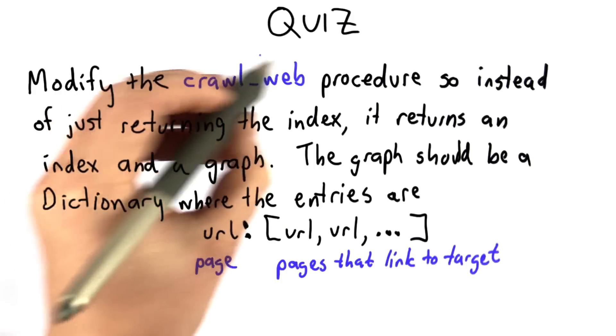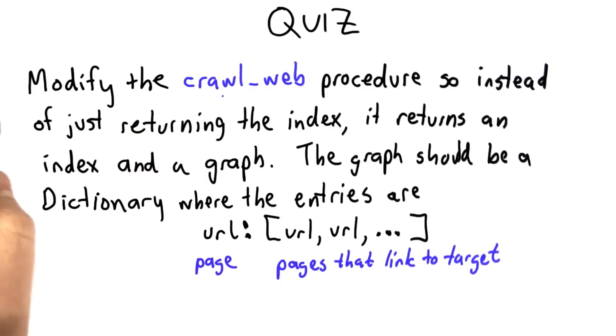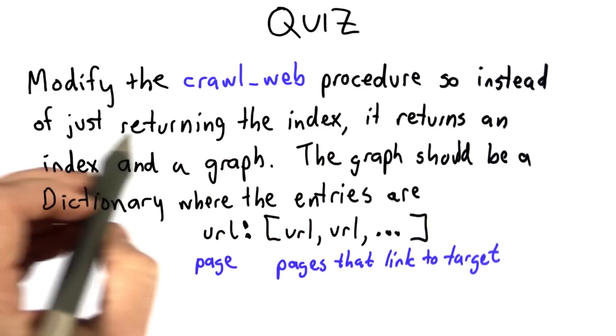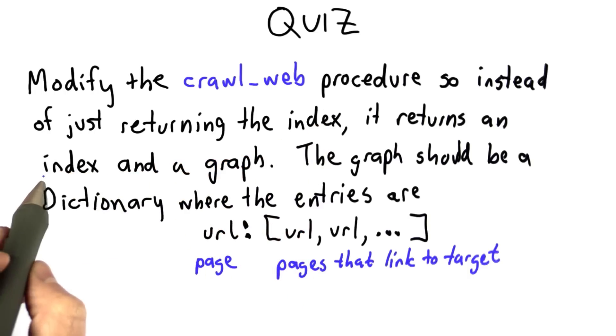So your goal for this quiz is to finish modifying the crawl web procedure so that instead of returning just the index, it returns both an index and a graph, and the graph gives the link structure.